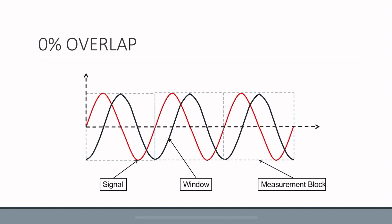This is an example of 0% overlap. We've considered a red wave, which is a signal, and the black wave is the window. We're forcing the signal to be periodic in the time domain, but there's only one window within one measurement block. So there's no overlapping or crossover of windows.